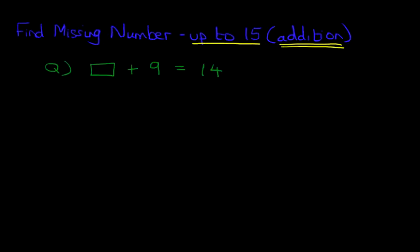Now, as we've mentioned before, there are several different methods to do this. So let's look at a few of them. We're going to start with the dot method. I'm going to rewrite the question again so we can do some workings. Something plus 9 equals 14.